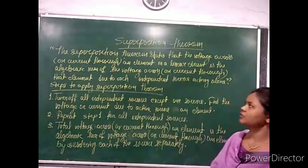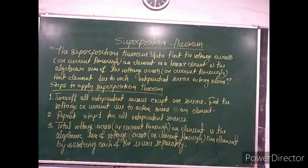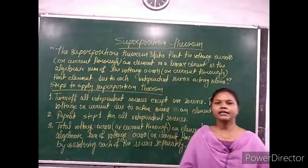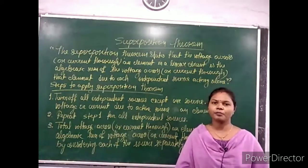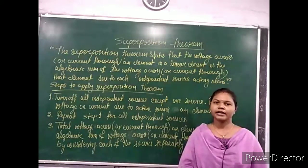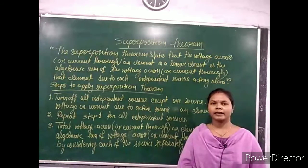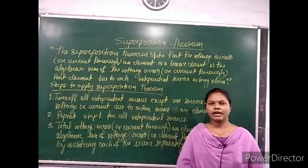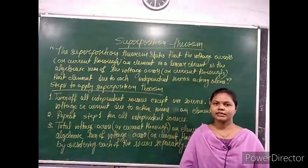Superposition theorem states that the voltage across or current through an element in a linear circuit is the algebraic sum of the voltage across or current through that element due to each independent source acting alone. Alternatively, in any linear bilateral network consisting of more than one independent source, the voltage or current through an element is the algebraic sum found by considering each source separately.